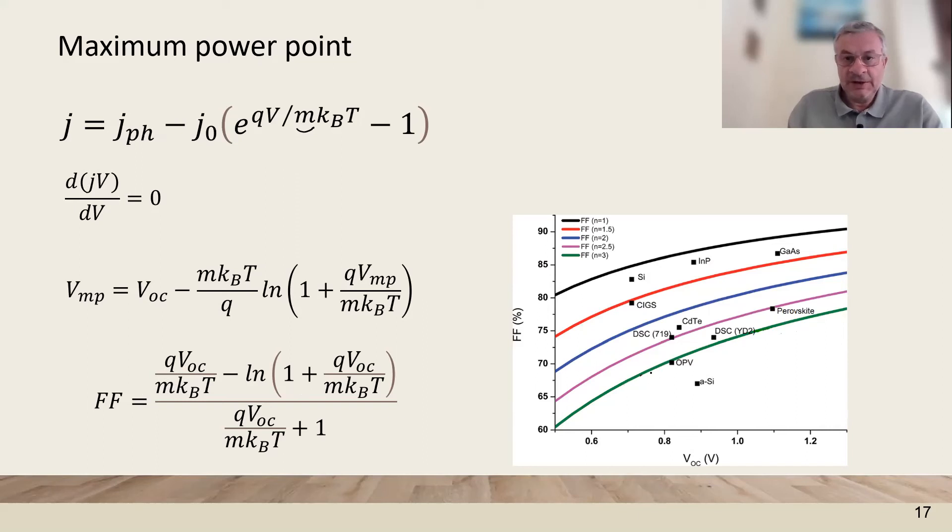The fill factor decreases when the diode ideality factor becomes larger than one. And here we can see some examples of the factors that affect different photovoltaic technologies.